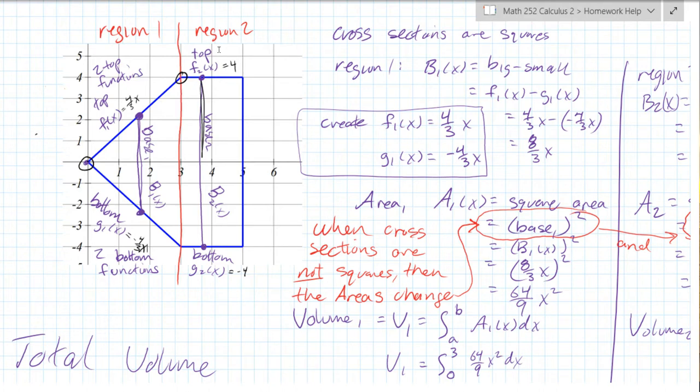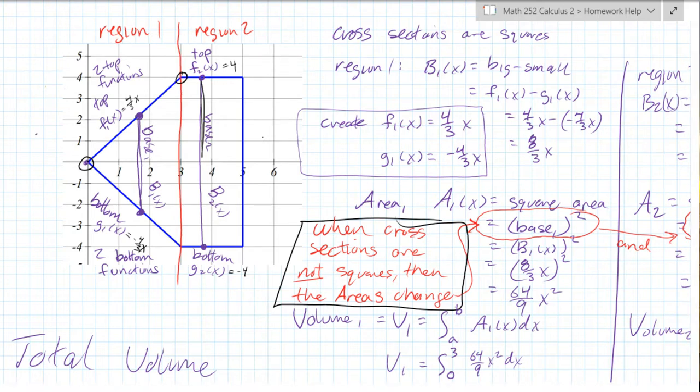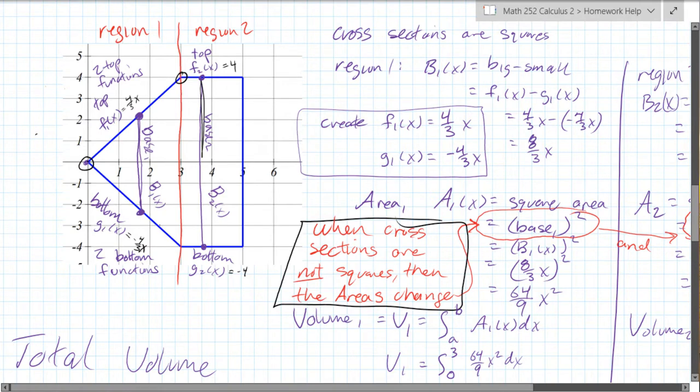The other problems that are similar to this problem, your cross-sections are not squares, so what is gonna change on those problems is what I have right here in red. So some of those are triangles, some are half circles, so a triangle is one half base times height.